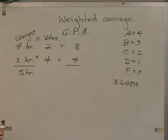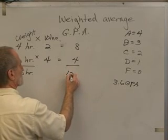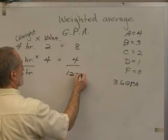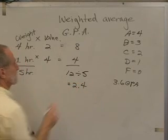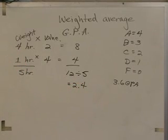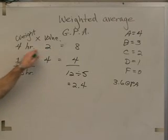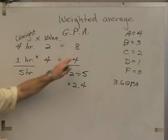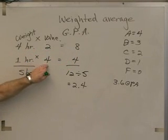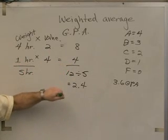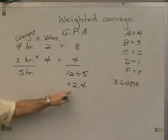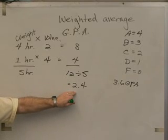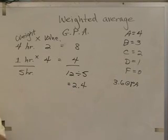I get 12. Is that what everybody gets? Two points times four hours is eight points. Four points times one hour is four points. Twelve total points divided by five total weights is a 2.4 GPA. Big difference, isn't it? Same two grades.